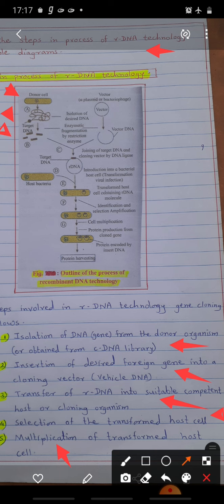Second step is insertion of desired foreign gene into cloning vector. Cloning vector is also called vehicle DNA. So the foreign DNA or passenger DNA is inserted into cloning vector, vehicle DNA, like bacterial plasmid.